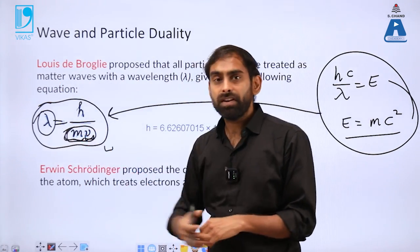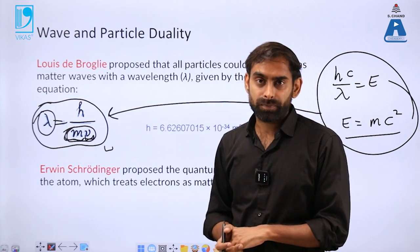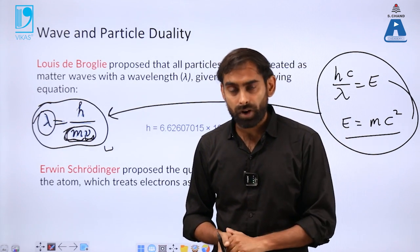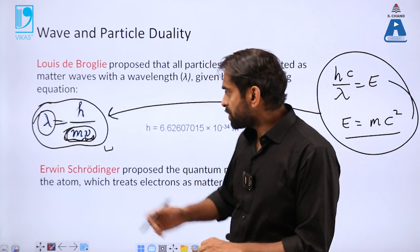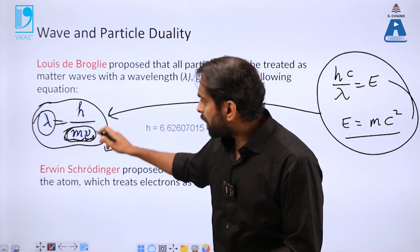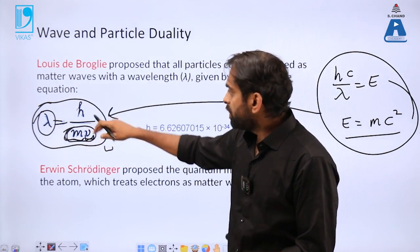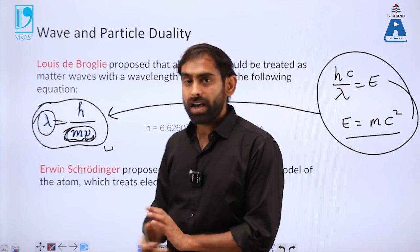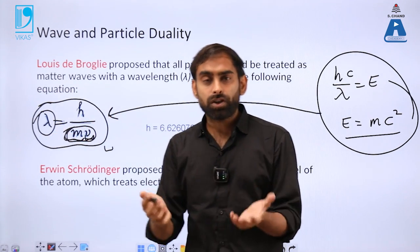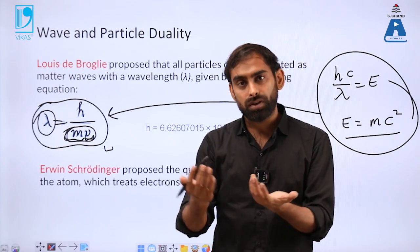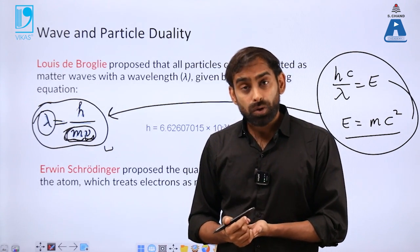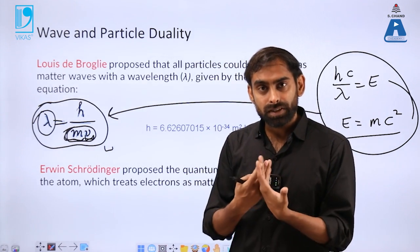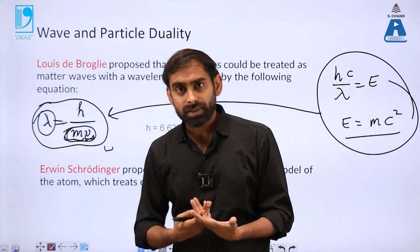The good part about subatomic particles like electrons, protons, and neutrons is that although they are lighter, they have enormously high velocity. Similarly, photons have enormously high velocity of light, so those particles can have significantly higher value of λ compared to large objects.